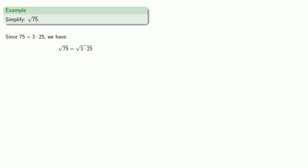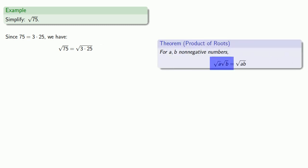Our theorem about the product of roots says that anytime we see a product of square roots, we can replace it with the square root of the product. But it also works backwards. Anytime we see the square root of a product, we can replace it with the product of the square roots. So that means we can replace this square root of 3 times 25 with square root of 3 times square root of 25.